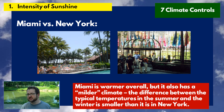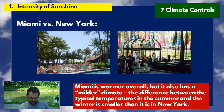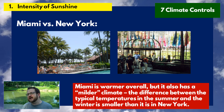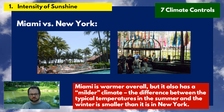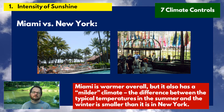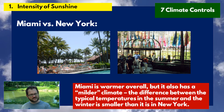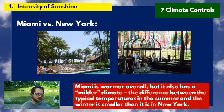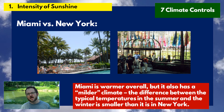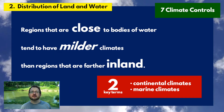Miami was warmer overall, but it also had a milder climate — the difference between typical winter and summer temperatures was smaller than at higher latitude New York. This is the kind of comparison that appears on quizzes and homework: when comparing two locations, consider latitude not only in terms of overall warmth, but also in terms of the smaller seasonal temperature difference closer to the equator.